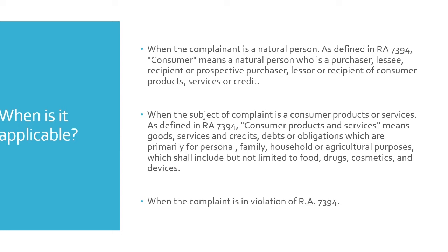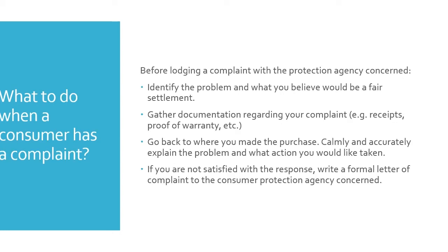Lastly, the complaint must be in violation of RA 7394. So what to do when a consumer has a complaint? Before lodging a complaint with the protection agency concerned, first, identify the problem and what you believe would be a fair settlement — for example, the problem is a defective product, and what do you want to happen: a refund, replacement, or repair? Second, gather documentation regarding your complaint, such as receipts, referral warranty, and any other proof of purchase. Third, go back to where you made the purchase and calmly and accurately explain the problem and what action you would like to take. If you are not satisfied with the response, write a formal letter of complaint to the consumer protection agency concerned — be it DTI, DOH, Department of Agriculture, or Department of Education.